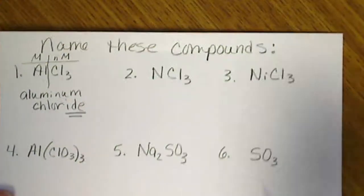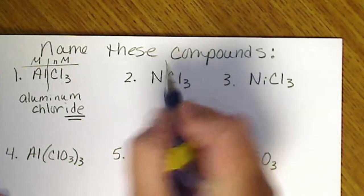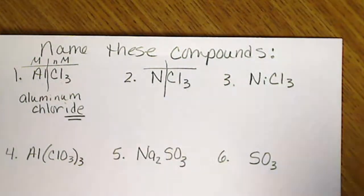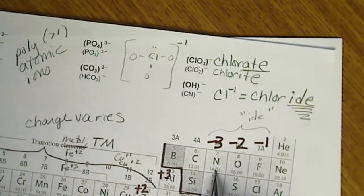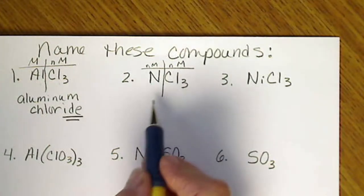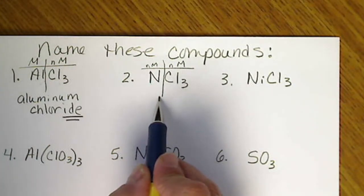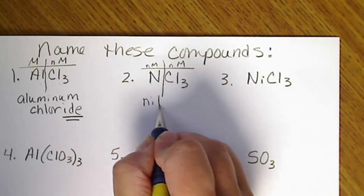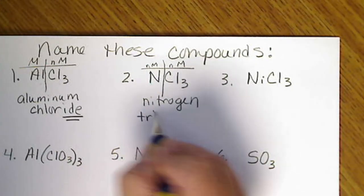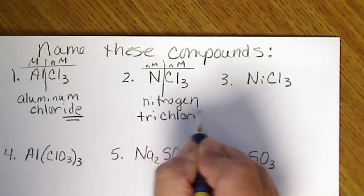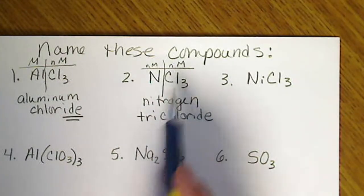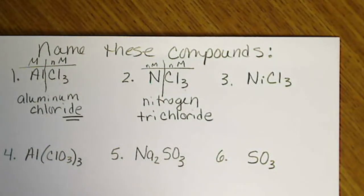The next one, we draw a line after the first atom and look. Is it a metal or a non-metal? Well, that's a non-metal. So we have non-metal, non-metal. We use Greek prefixes here. So this is nitrogen trichloride. We have to say how many chlorides there are because we have two non-metals.